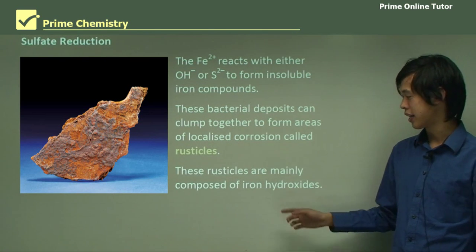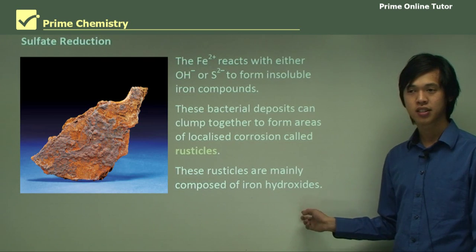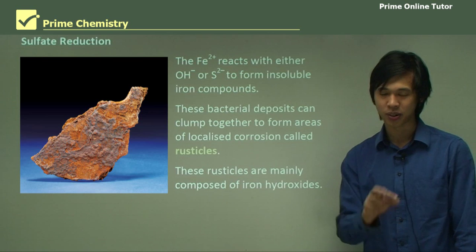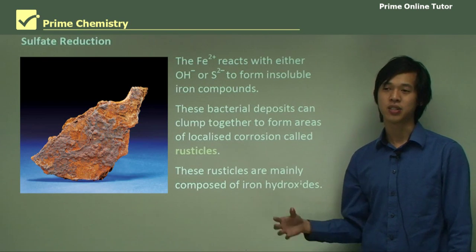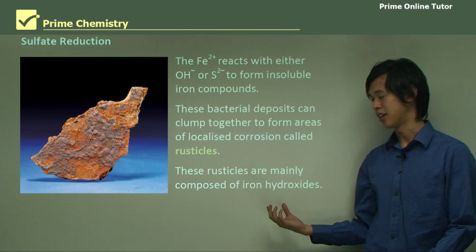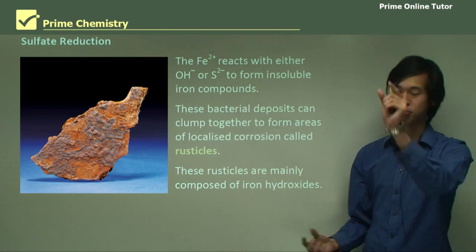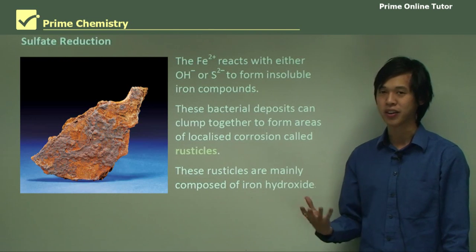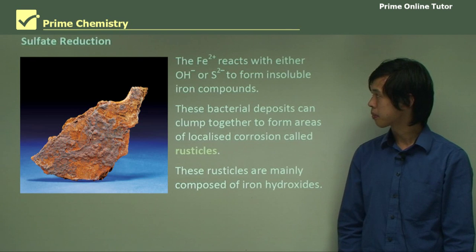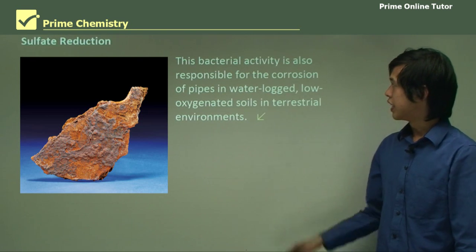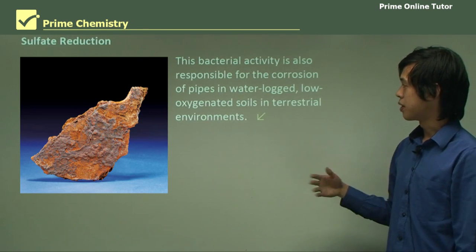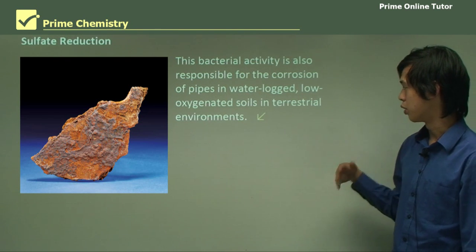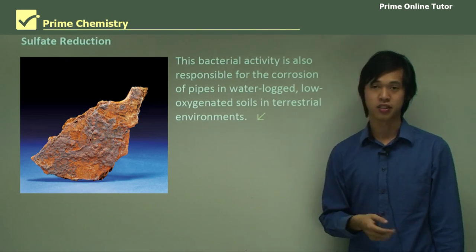Rusticles are mainly composed of iron hydroxides. Remembering that iron hydroxide tends to be that brownish, rusty colour we always associate with rust — that's why we can see rusticles should mostly be made of iron hydroxides, because the rusticle itself is quite brownish. This bacterial activity is also responsible for the corrosion of pipes in waterlogged or low-oxygenated soils in terrestrial environments.